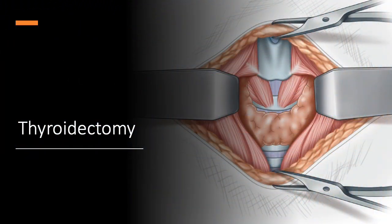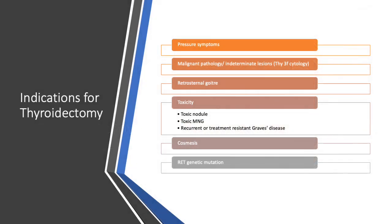Next, we will discuss important aspects of thyroidectomy. Indications for thyroidectomy include pressure symptoms, malignant or intermediate pathologies such as Thy3f (follicular cytology on FNAC), retrosternal goiter, toxicity, cosmesis, and RET genetic mutation in the family history of medullary carcinoma of the thyroid.